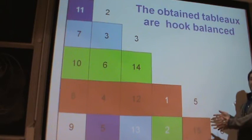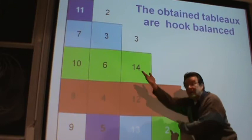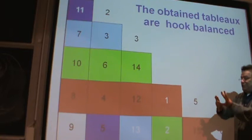What about the other way around? If you give me one of these tableaux, can you come back and recover the maximal chain? Yes. So this is a one-to-one correspondence — this object is no different from the maximal chain we started with.